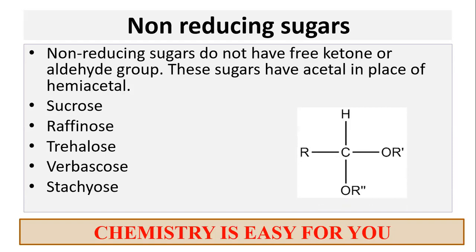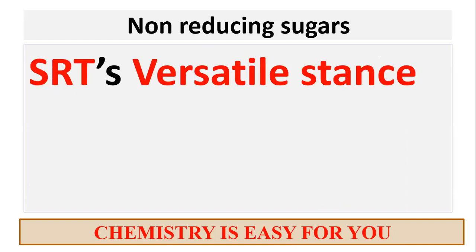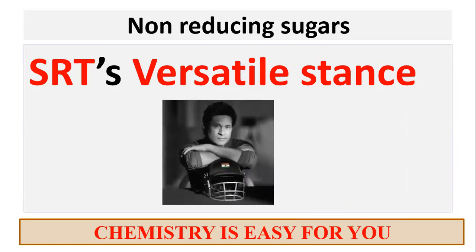The memory hack for non-reducing sugars is: 'SRT's versatile stance.' All of you might love cricket — SRT is Sachin Ramesh Tendulkar. 'SRT's versatile stance' is something we often hear in commentary when Sachin comes for batting. Just remember this one sentence and the non-reducing sugar names can be memorized from it.